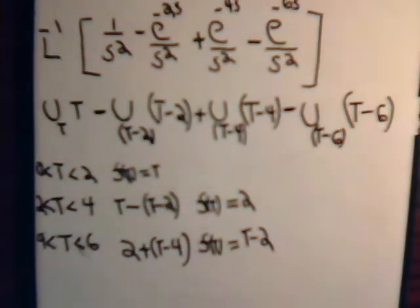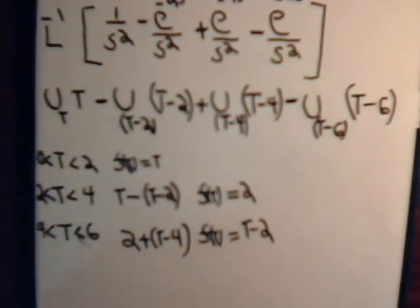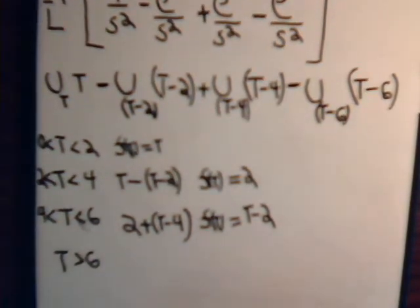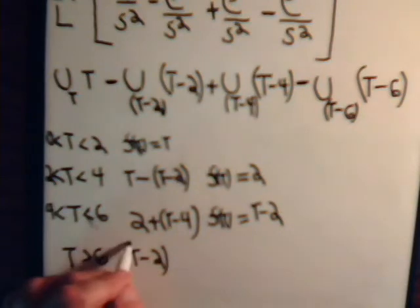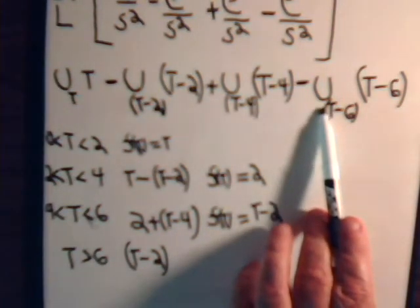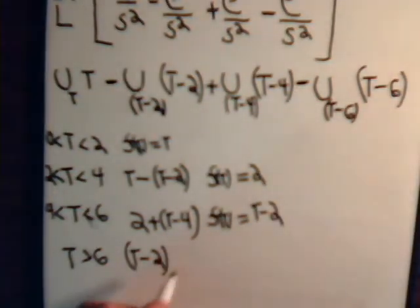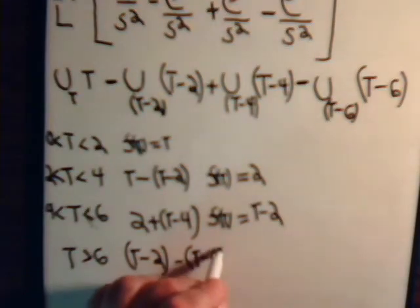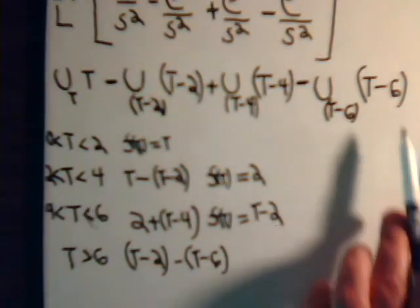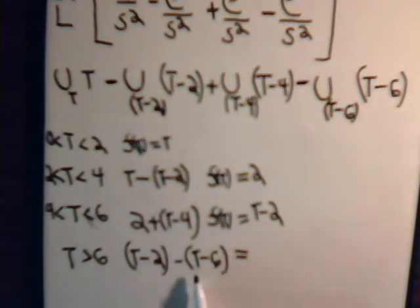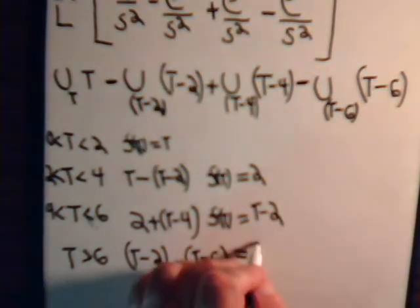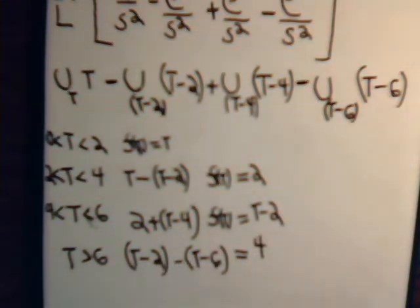Finally when t equals 6 the last term kicks in. For t greater than 6, up to that point it was t minus 2, and now we subtract t minus 6. That gives t minus t equals 0, then negative 2 plus 6 equals positive 4. So beyond t equals 6, f of t equals 4.